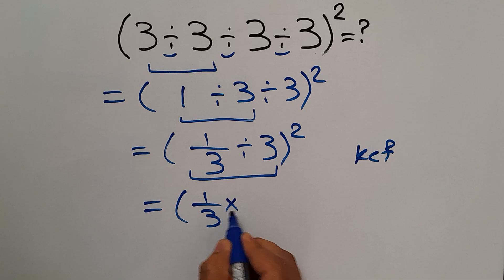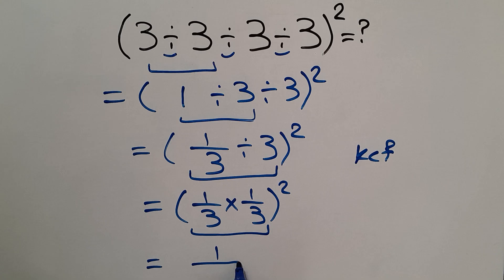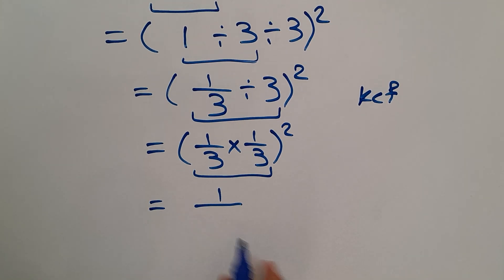Parentheses, 1 over 3 times 1 over 3, whole squared. And 1 over 3 times 1 over 3 equals 1 over 3 times 3, which equals 9, giving us 1 over 9.